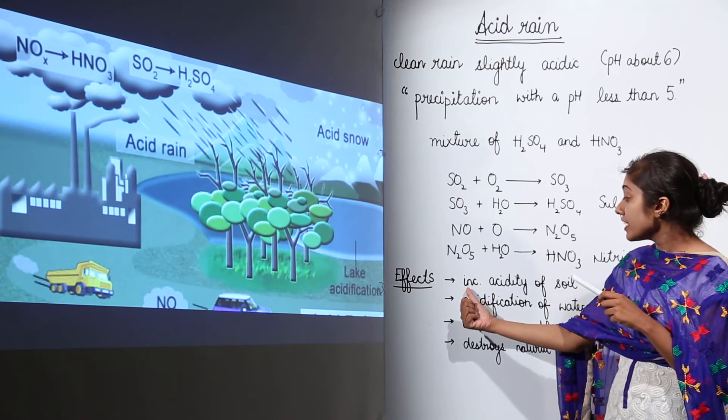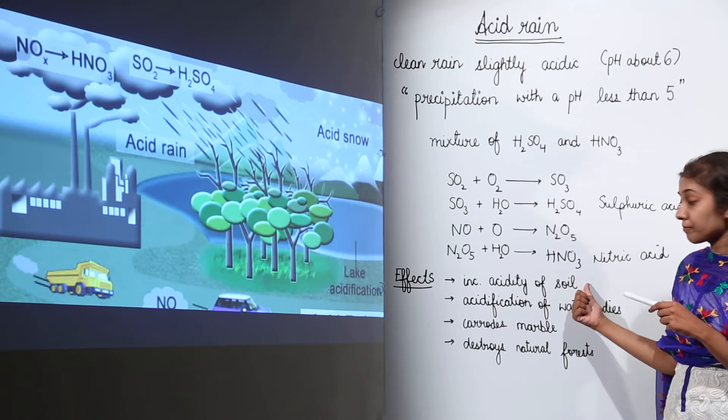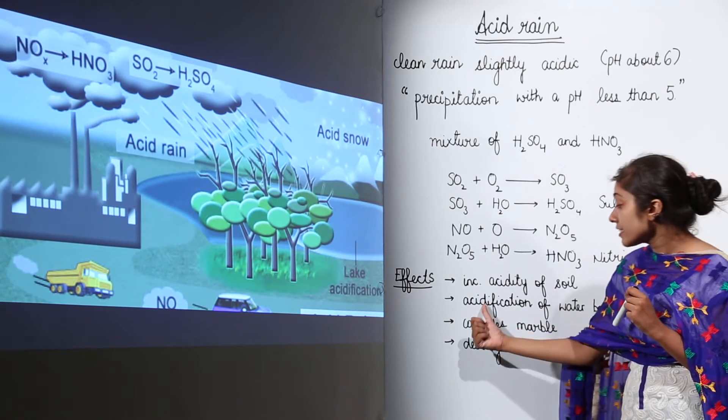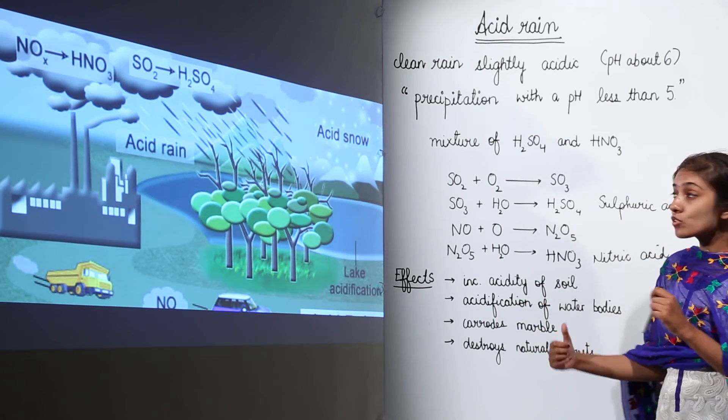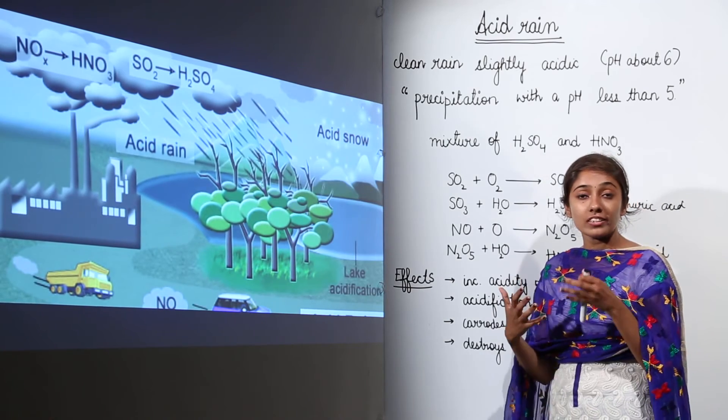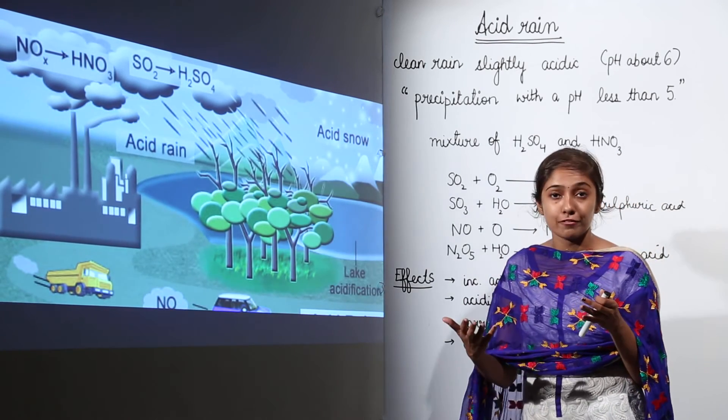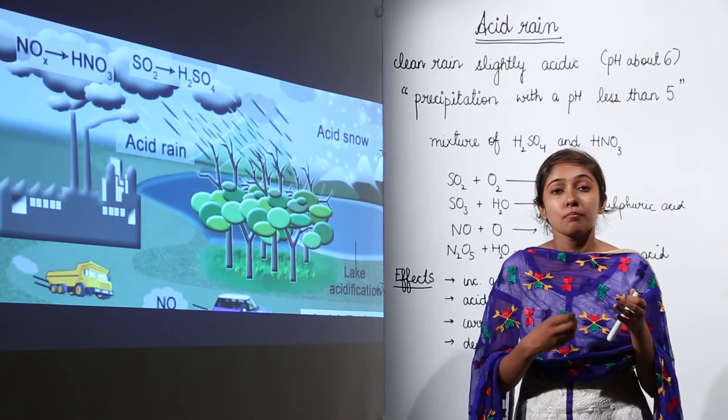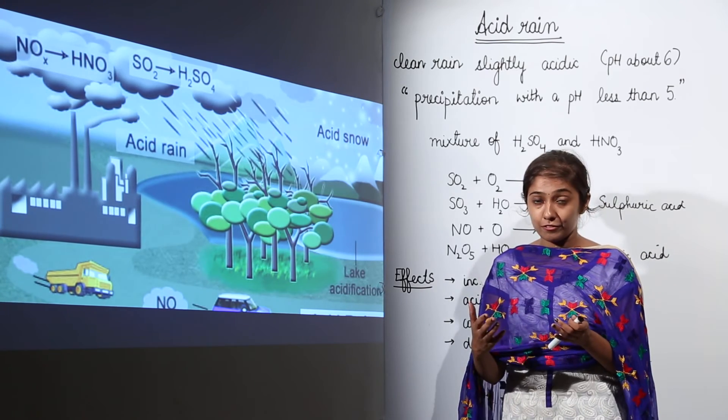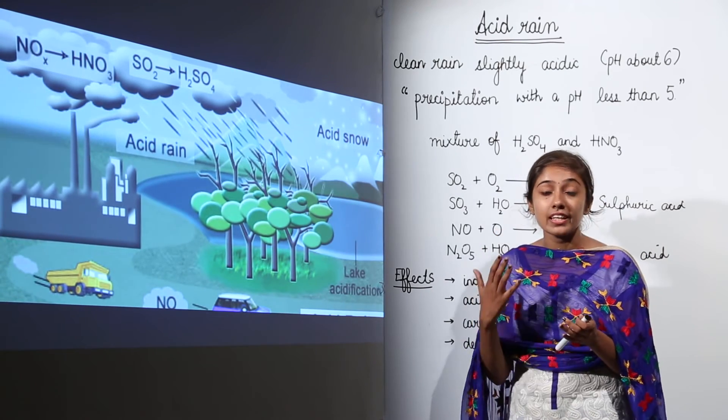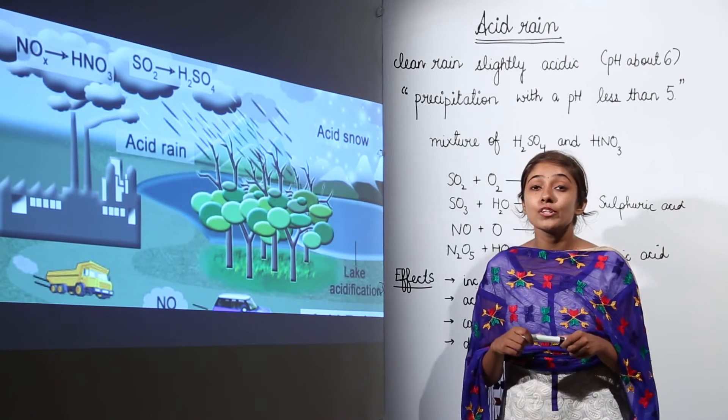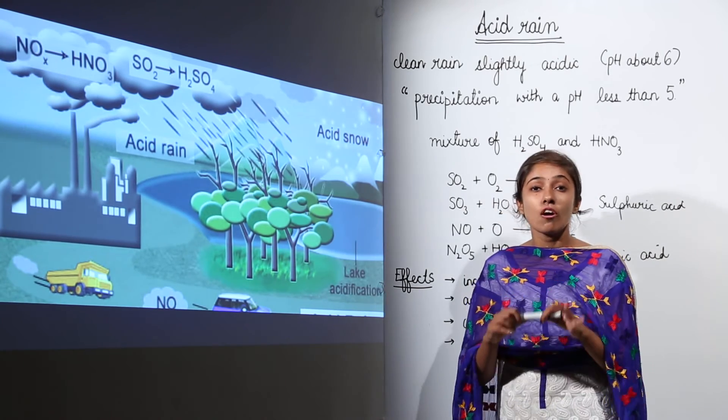Secondly, it leads to acidification of water bodies. So when this acid rain mixes with water bodies, it is going to affect the aquatic life. Because many fishes, many aquatic animals live there and they are going to suffer because the water bodies are going to turn acidic because of acid rain.